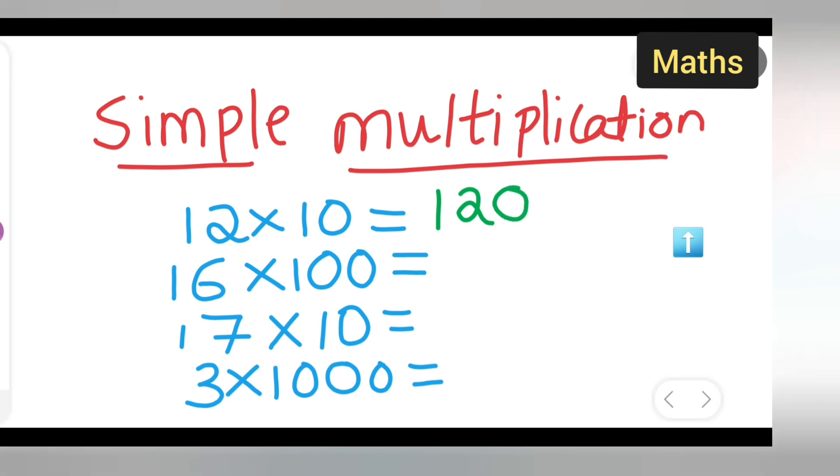Next, what you are going to do is 16 multiplied by 100. What answer you will get: 1, 6, 0, 0.